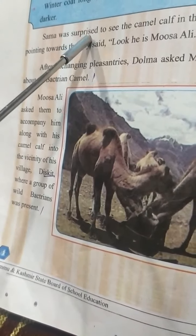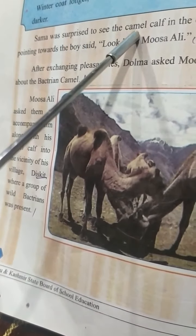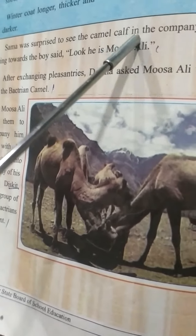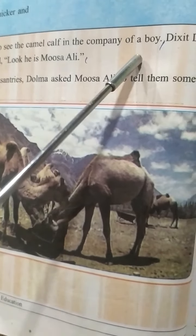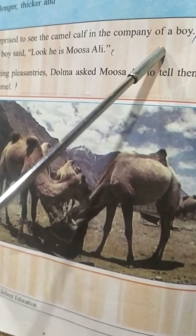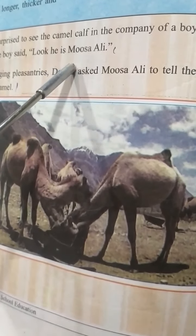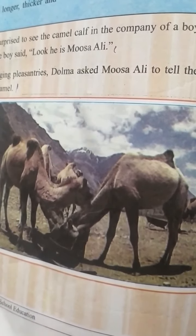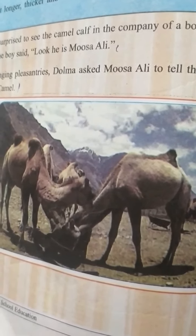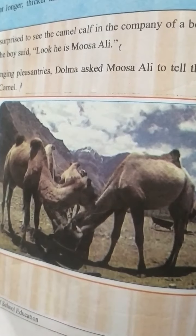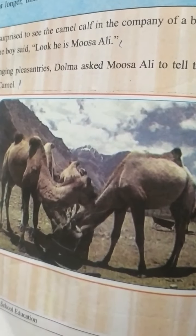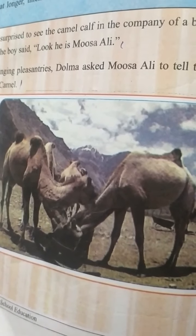Sama was surprised to see the camel calf in the company of a boy. Sama hairan ho gayi, usne dekha camel calf jo hai, oont ka baccha jo hai, wo bachon ki company mein hai.